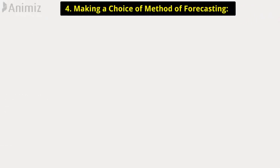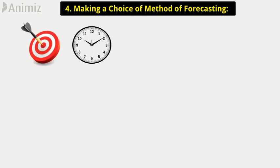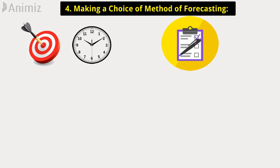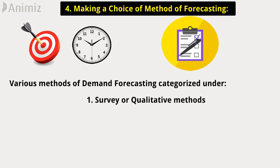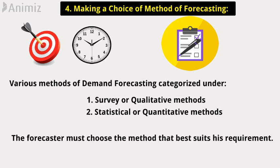Step 4: Making a choice of method of forecasting. After setting the aim and time perspective, the method for implementing the forecast is selected. There are various methods of demand forecasting categorized under survey or qualitative methods, and statistical or quantitative methods. The forecaster must choose the method that best suits their requirement. The different methods of forecasting are discussed later in this video, so watch the video till the end.